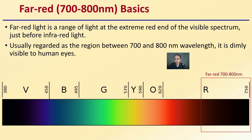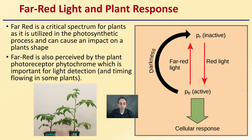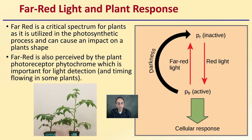Far red wavelength is in the 700 to 800 nanometer range, at the extreme red end of the visual spectrum just before infrared. It is dimly visible to human eyes, pushing the edge of the visible spectrum. Far red is a critical spectrum for plants as it's utilized in the photosynthetic process and can impact plant shape. Far red is also perceived by the plant photoreceptor phytochrome, which is important for light detection, timing, and flowering. Far red drives the phytochrome from the active (Pr) to the inactive (Pfr) form — you can force this transition quicker with added far red light. Plants grown with far red show definite increases in height, internode spacing, and stretching.